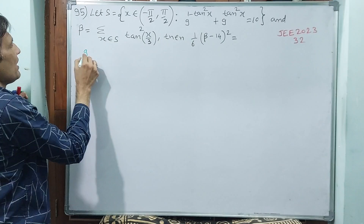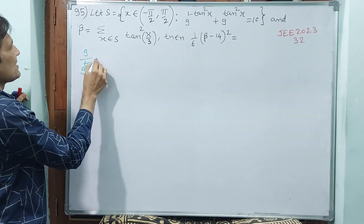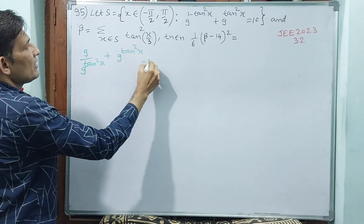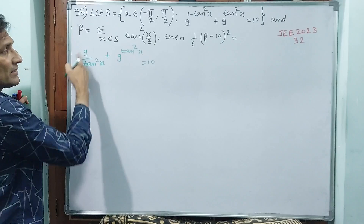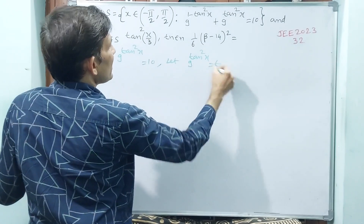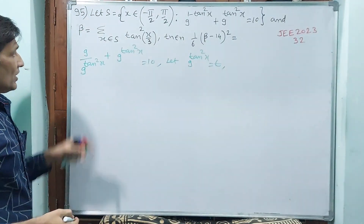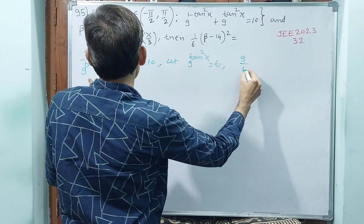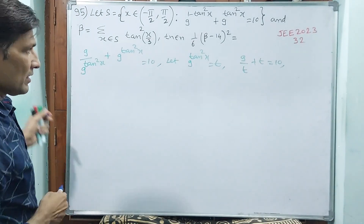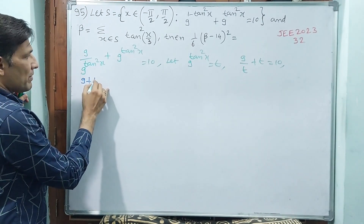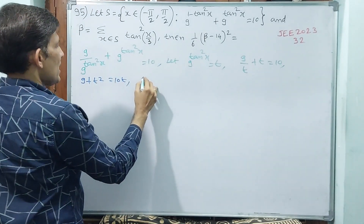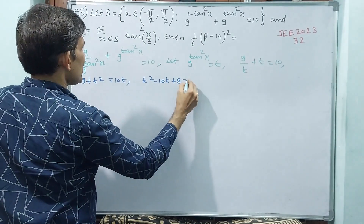So let us write that equation like this. You see: 9 divided by 9 power (tan squared x) plus 9 power (tan squared x) is equal to 10. This is because this is 9 power (1 minus tan squared x). Now let t equal to 9 power (tan squared x). This equation becomes: 9 by t plus t is equal to 10. Cross multiplying: 9 plus t squared equals 10t.